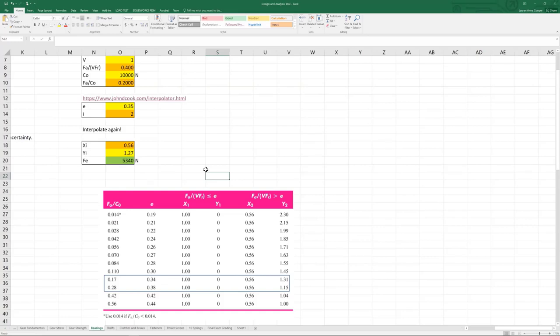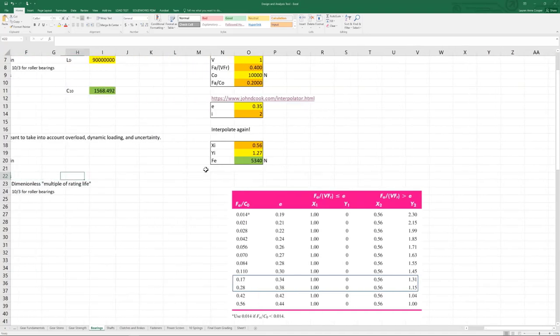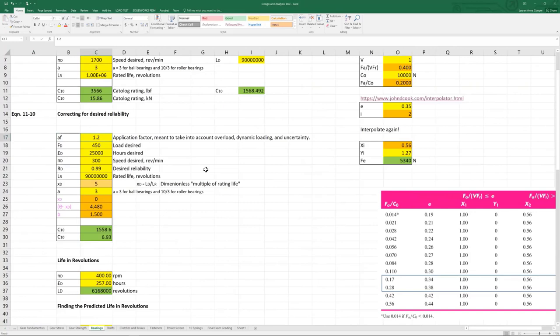Second part, determine the predicted life in revolutions that this bearing could be expected to give in a commercial loading application with a 99% reliability. So then we're going to go back to equation 11.10, because we have a 99% reliability, so we need to do that whole Weibull parameter thing here. So application factor, for commercial loading, 1.2 is in the middle. Here is the key point: for your load desired, your FD, that is going to become your FE, your equivalent radial load. So 5340.